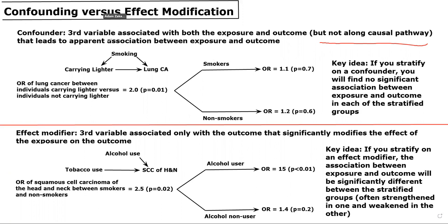So in this case, let's imagine the relationship between smoking, carrying a lighter, and lung cancer. If you're interested in seeing whether carrying a lighter makes you more or less likely to have lung cancer, it makes sense that smoking would be an obvious confounder of that relationship, because smoking would make you more likely to carry a lighter and also more likely to have lung cancer.